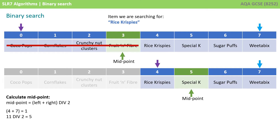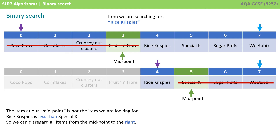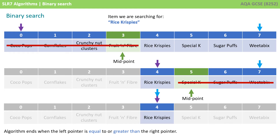The left pointer, 4, plus the right pointer, 7, equals 11. Divided by 2 is 5, so the midpoint is 5. Is Special K the item we're looking for? No, it is greater, so we can disregard all the items to the right. The right pointer now becomes the mid pointer minus 1, which is 4.